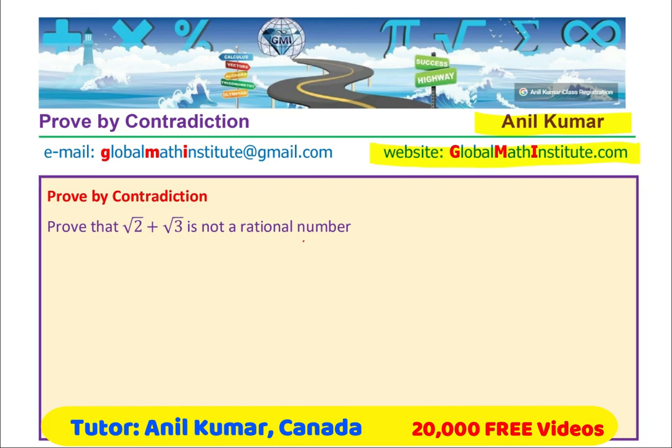Here is another very interesting question where we will use prove by contradiction. Now these questions are very tricky. You have to play with the words to really prove by contradiction. The question here is, prove that square root 2 plus square root 3 is not a rational number.